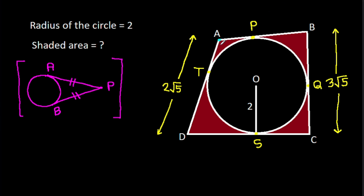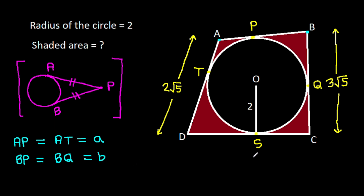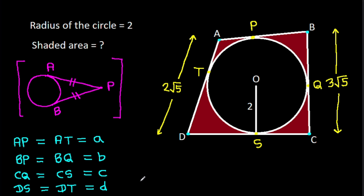So from point A: AP equals AT, suppose this value is 'a'. From point B: BP equals BQ, suppose 'b'. From point C: CQ equals CS, suppose 'c'. And from point D: DS equals DT, suppose 'd'. So we have AP=a, AT=a, BP=b, BQ=b, CQ=c, CS=c, DS=d, and DT=d.